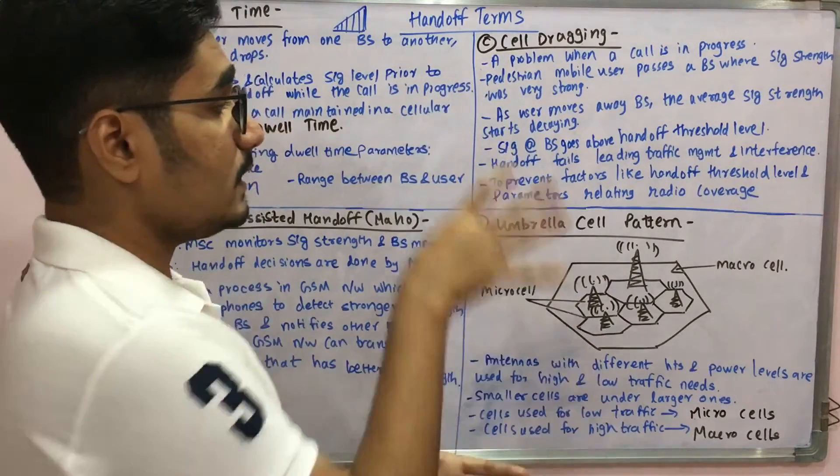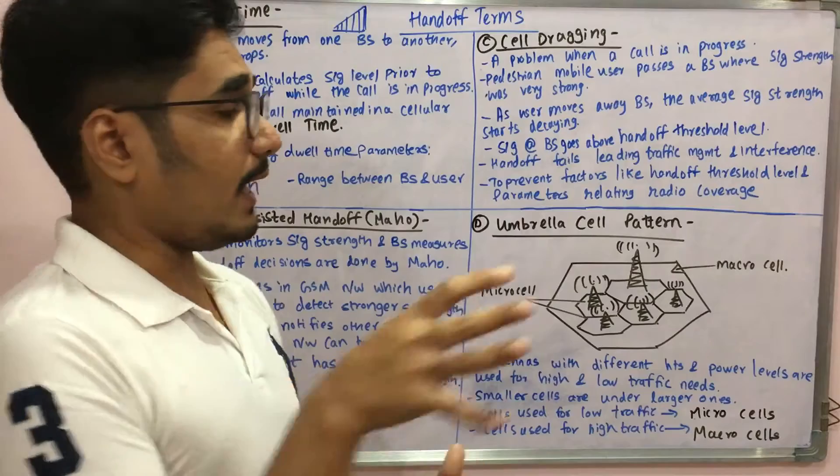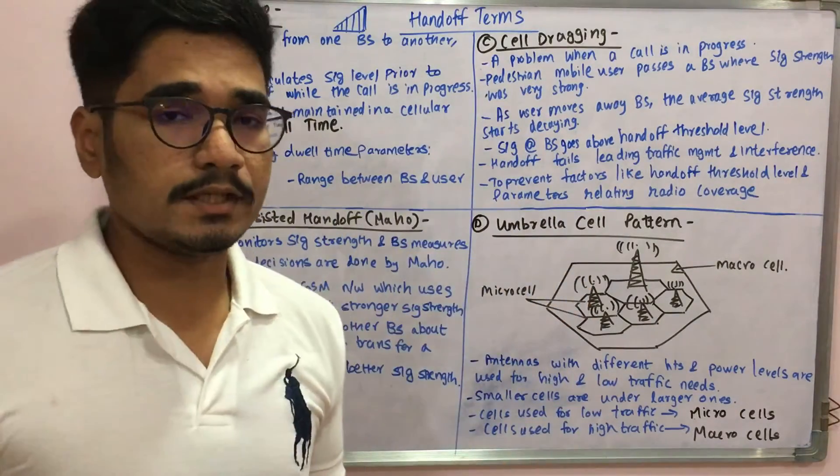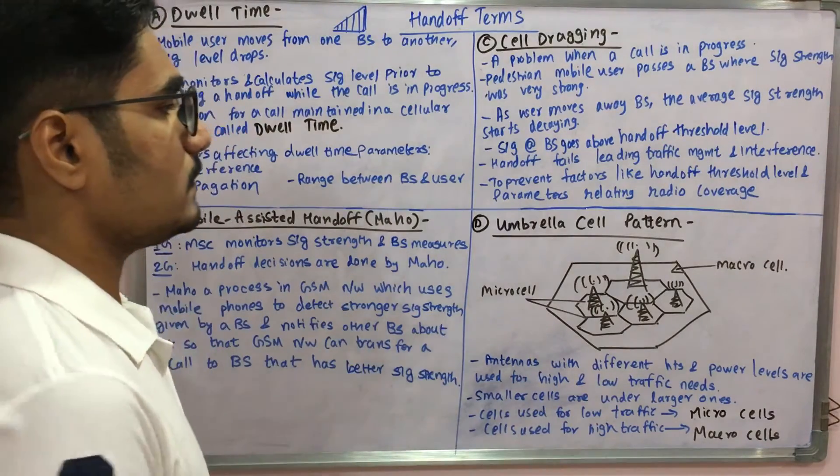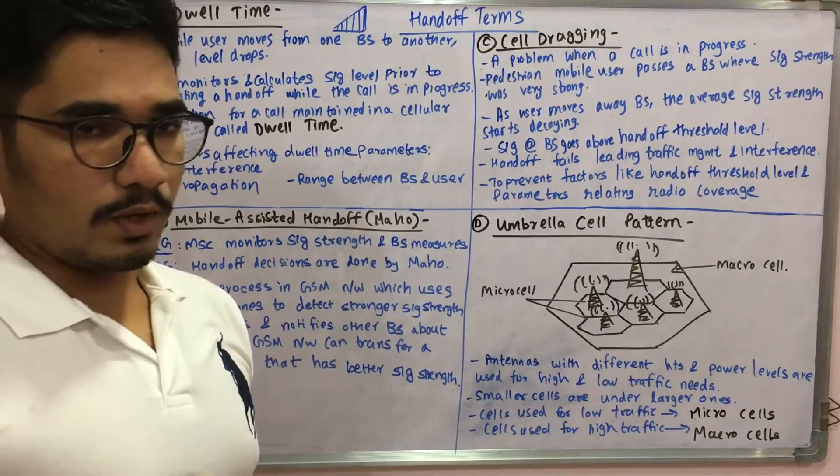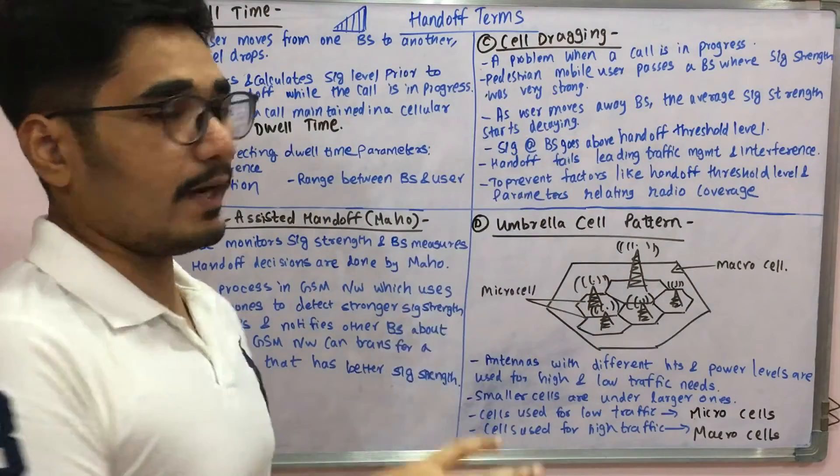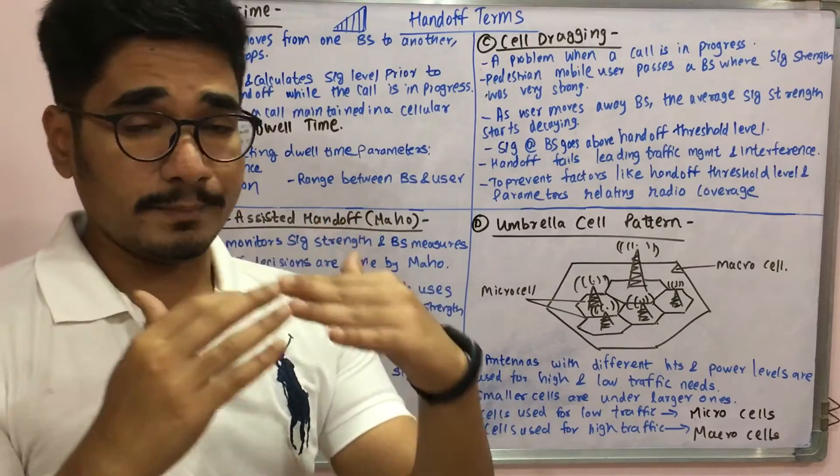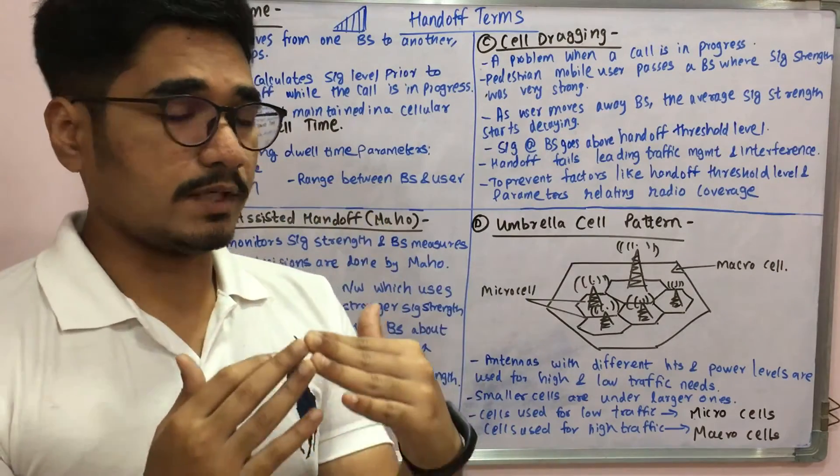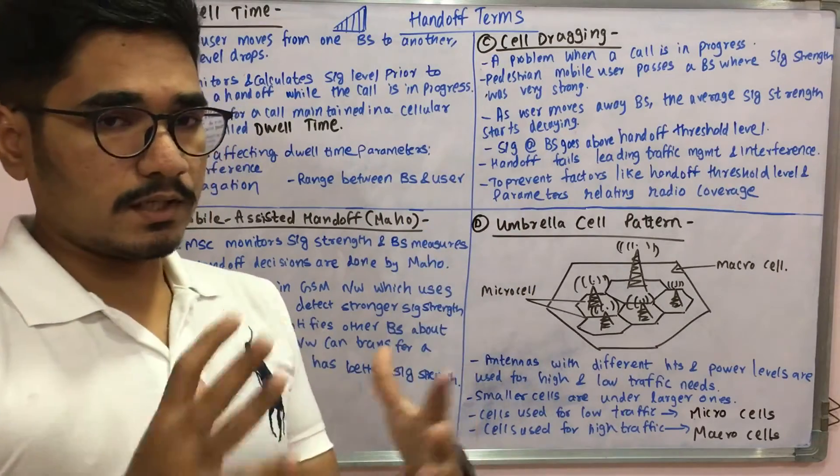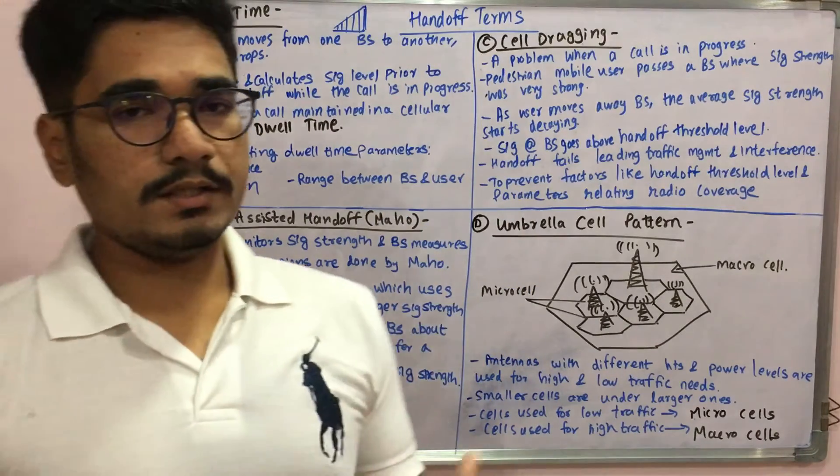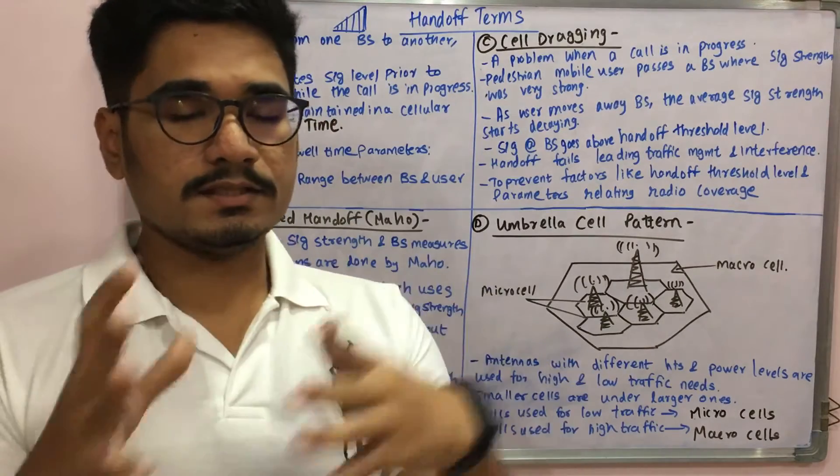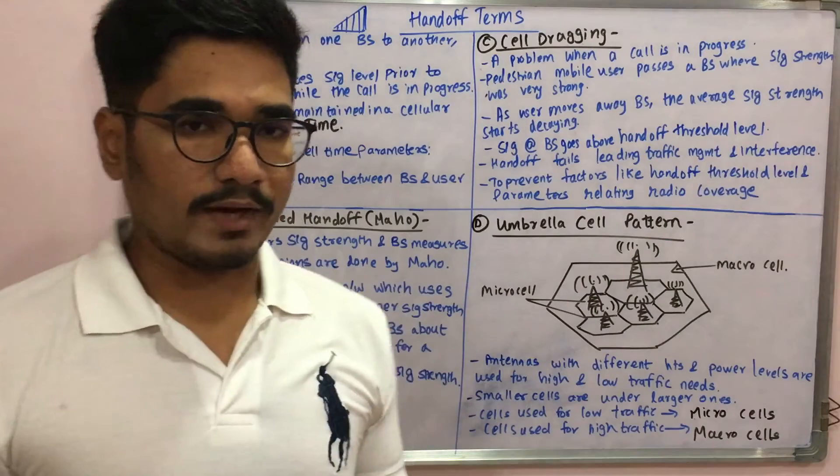What happens is the handoff technique or mechanism fails, leading to inconsistent traffic management and also causes interference and jamming by the nearby vicinity signals. To prevent this, you need to take care regarding the handoff threshold level and check whether it's proper. The parameters relating to radio coverage, the footprint, or whether the cells are properly clustered or the adjacent cells are not causing any interference - a number of factors are there.